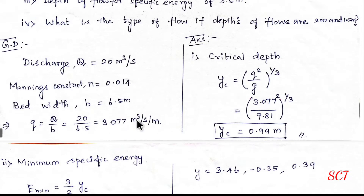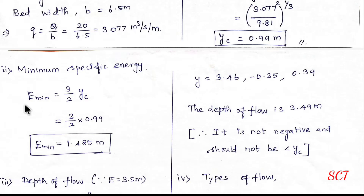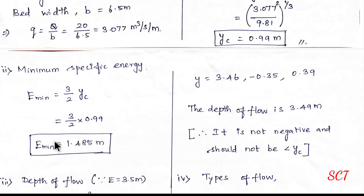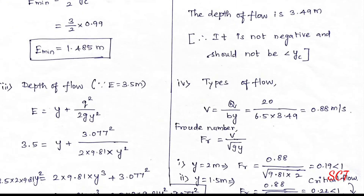Next we need to get minimum specific energy. E minimum is equal to 3 by 2 times Yc. Substituting Yc value, E minimum is 1.485 m. Next, depth of flow when specific energy is 3.5 m.